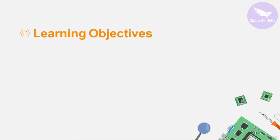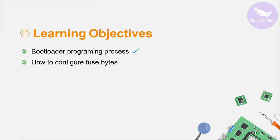So the learning objectives of this video are: first, the bootloader programming process — you will understand the process to program the bootloader in the microcontroller. The next point is how to configure fuse bytes. Whenever we program the bootloader in the microcontroller, we need to configure the fuse bytes, and I will show you where to get these fuse byte values in this video.